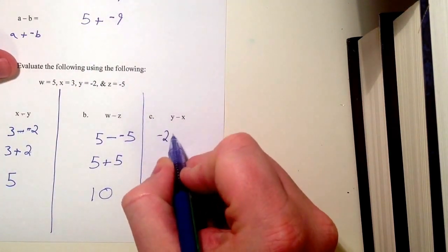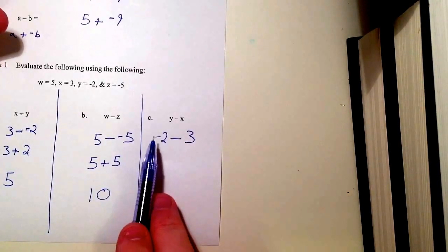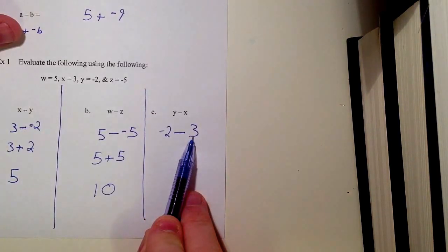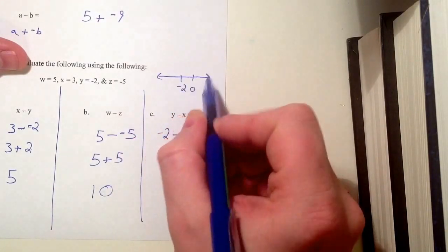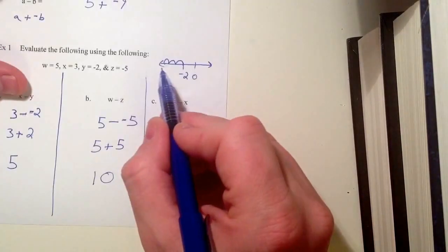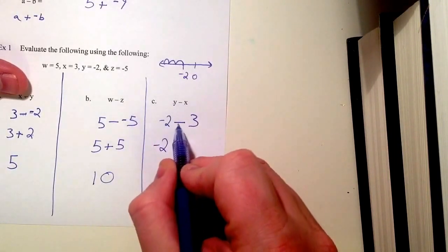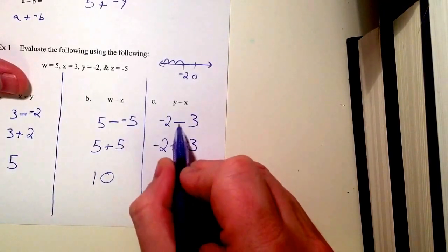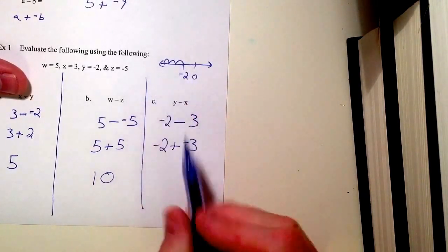Last one: Y minus X. Y is negative 2, minus, and X is 3 — so we get negative 2 minus 3. If you think about it intuitively: I'm down 2 and taking away another 3, so I owe someone $2 and I'm losing 3 more, meaning I'll be down 5. On a number line, starting at negative 2 and subtracting 3 means going 3 more steps left — farther from 0. Applying the rule: negative 2 stays the same, minus becomes plus, 3 becomes its opposite, negative 3. So negative 2 plus negative 3 equals negative 5.